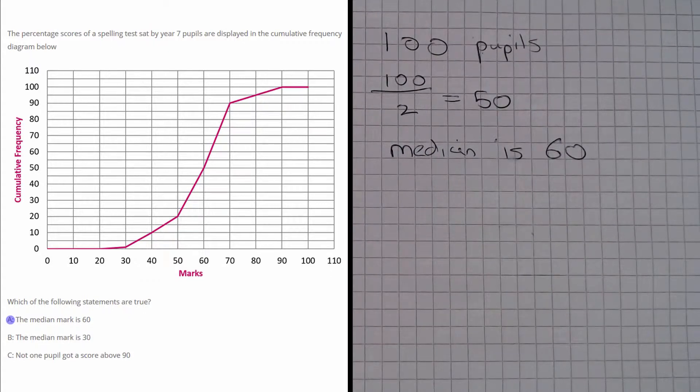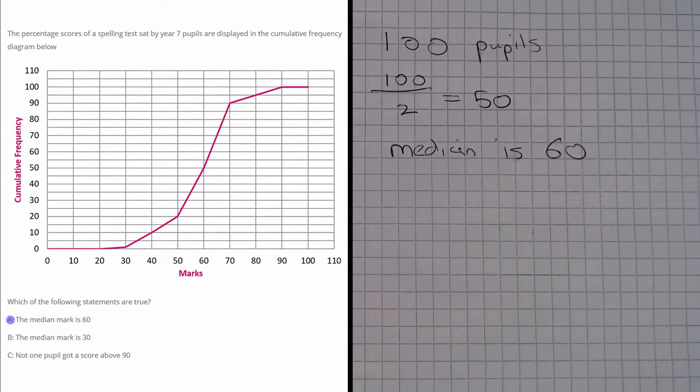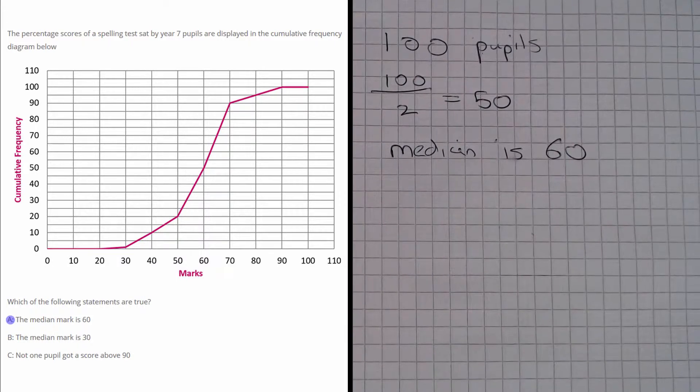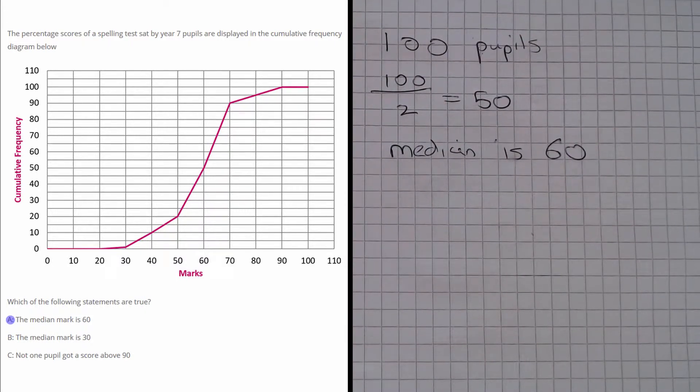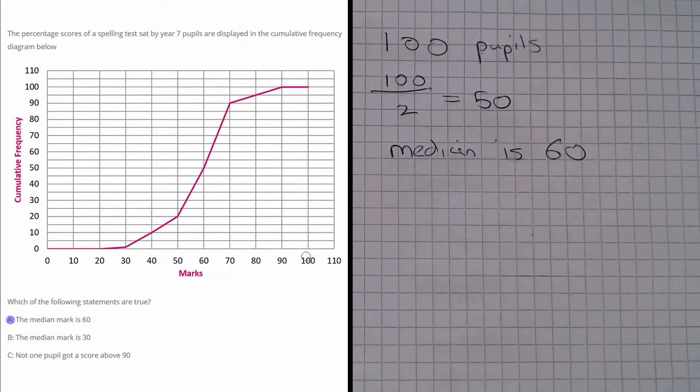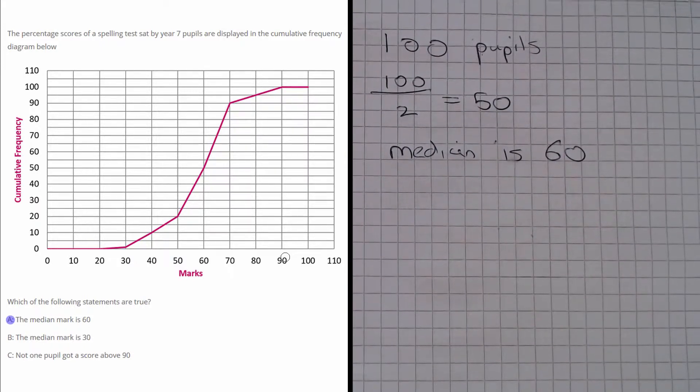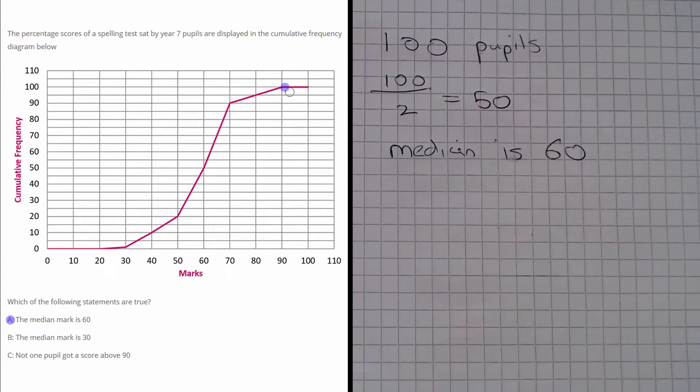So let's move on to part C. Part C says not one pupil got a score above 90. Now what we need to do is have a look at the graph around the 90 and above stage. Well if we look here in this section of graph between 90 and 100, notice that it's flat.